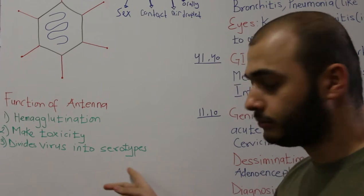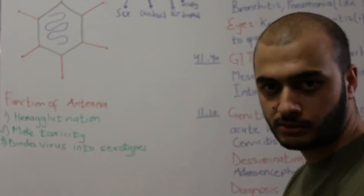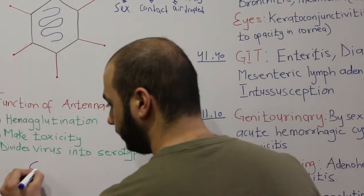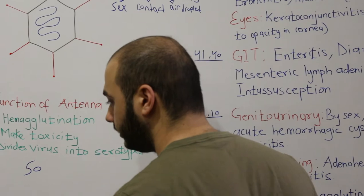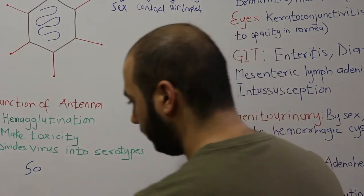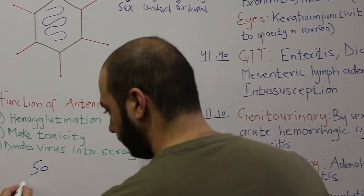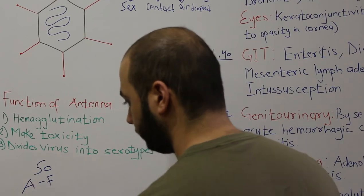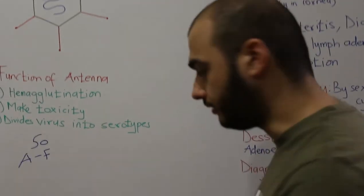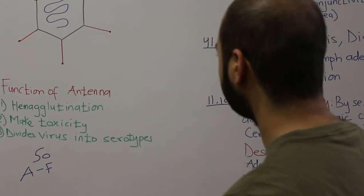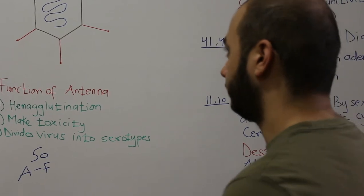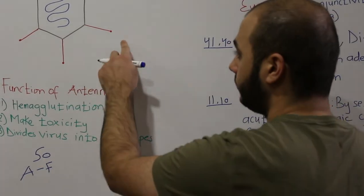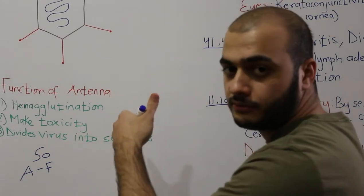The antenna also divides the virus into several serotypes. We have around 50 serotypes, and each serotype is divided into groups A through F. Now let's see which cells this virus tends to infect.